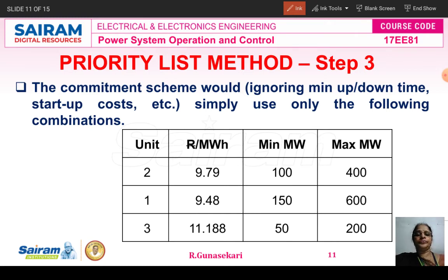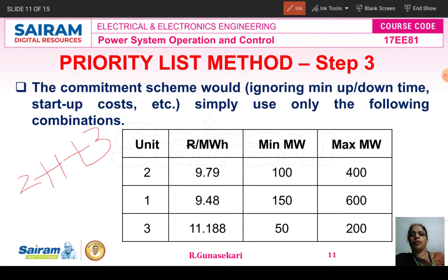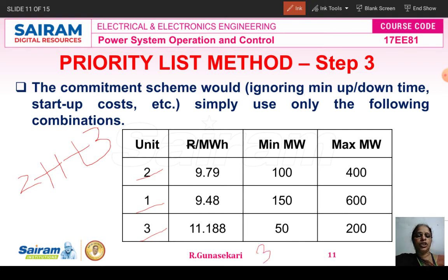Now, what are the combinations? The priority order is unit 2, unit 1, unit 3. From this, we can prepare the combinations. The first combination is 2+1+3. The minimum generation for this combination is 100+150+50 = 300 MW. The maximum generation for this combination is 1200 MW.